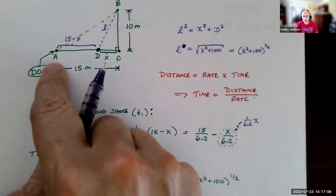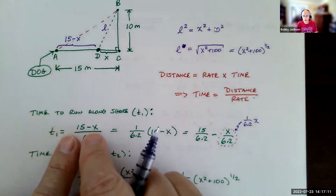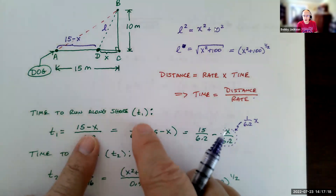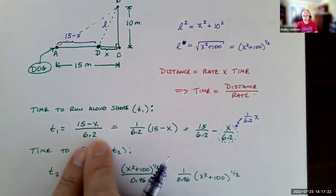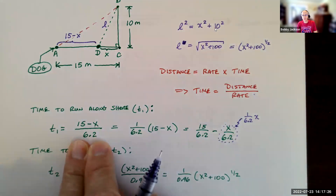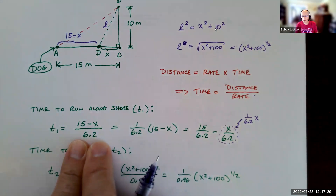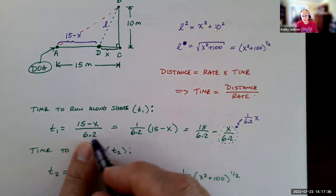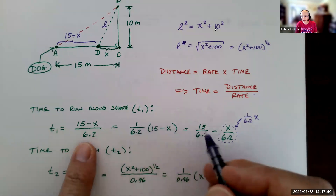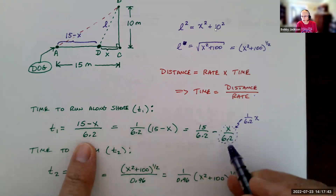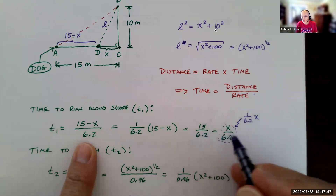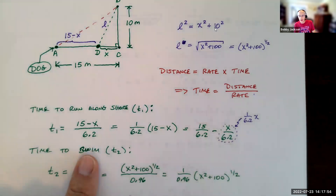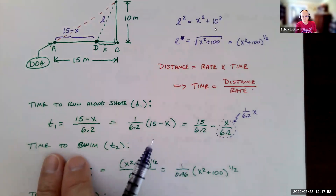The time for the dog to run along the shore from point A to point D — we'll call that T₁ — is the distance (15 minus X) divided by the rate of 6.2 meters per second. Dividing by 6.2 is the same as multiplying by 1/6.2. If I distribute that through and simplify, X divided by 6.2 is the same as (1/6.2)·X. So this is really just a linear function — a constant minus something times X — which is fairly easy to differentiate.